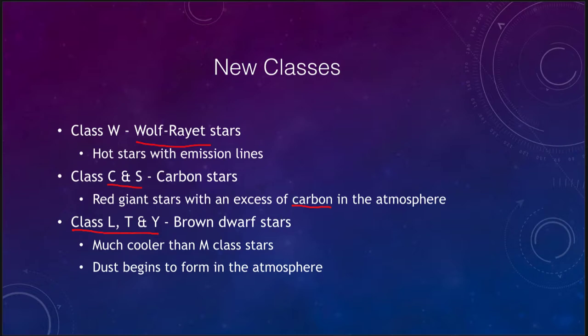The classes L, T, and Y stars are what are known as brown dwarfs. They are cooler than the M stars, down at the very end of that sequence at the very coolest stars. At those temperatures, dust begins to form in the atmosphere — not only are more complex molecules forming, but small dust particles actually begin to form as well.